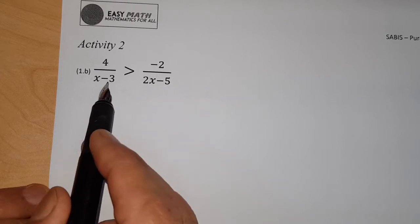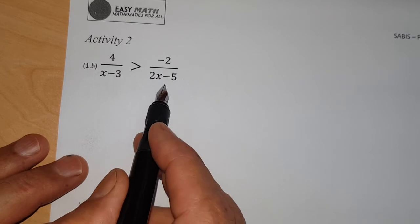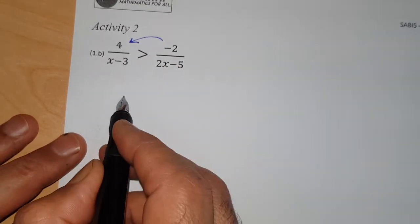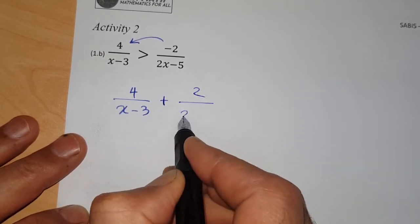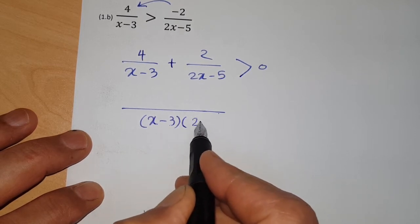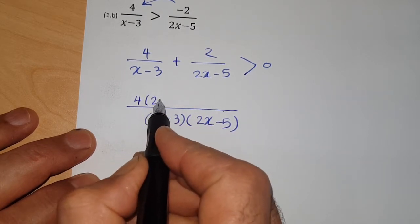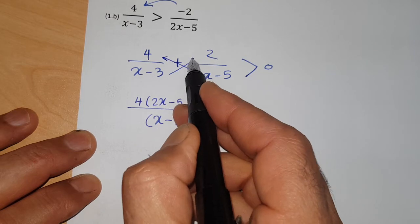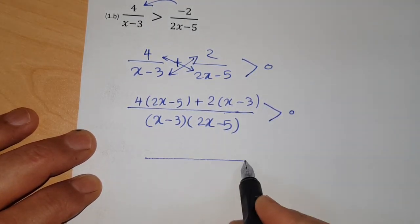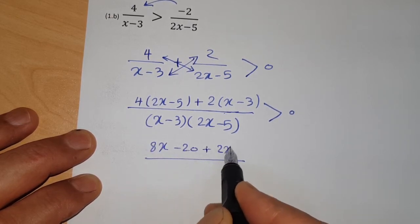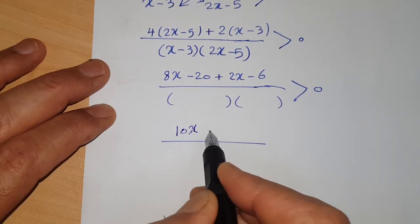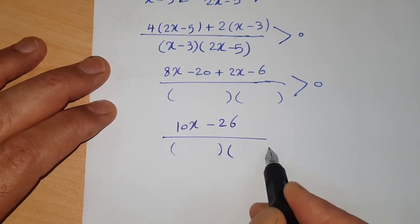Activity Number 2: solve 4/(x−3) ≥ −2/(2x−5). Move all terms to the left-hand side: 4/(x−3) + 2/(2x−5) > 0. Finding a common denominator by multiplying: the combined numerator is 4(2x−5) + 2(x−3) over (x−3)(2x−5), all bigger than zero. Expanding: 8x − 20 + 2x − 6 = 10x − 26.